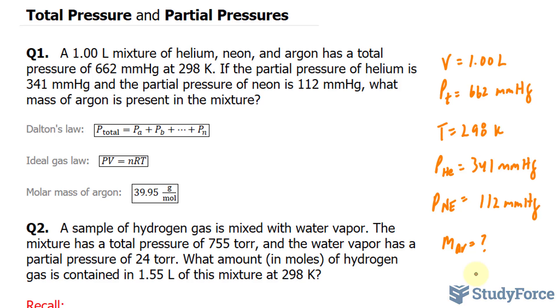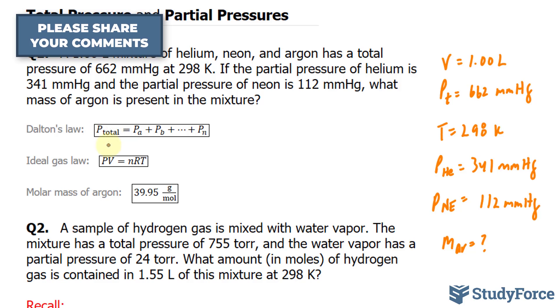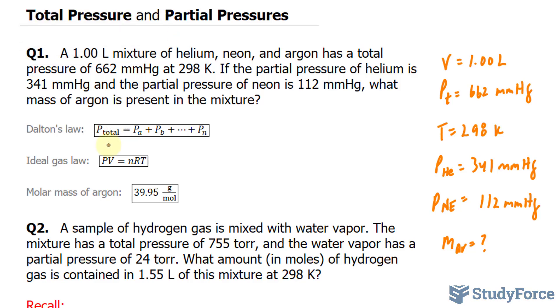So how do we do this? Well, I'm going to use Dalton's Law, which says that the total pressure is equal to the sum of the partial pressures. So let me represent that. I have 662 is equal to P_A, in my case will be 341, plus the partial pressure of my next gas, which is 112, and the partial pressure of Argon, P sub AR.